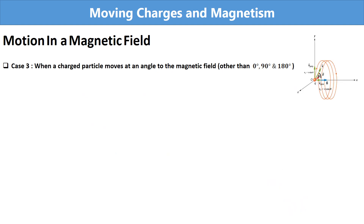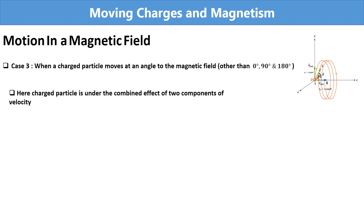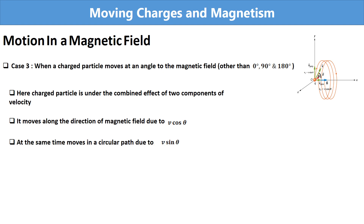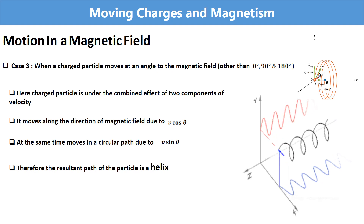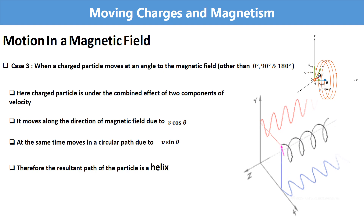When a charged particle moves at an angle to the magnetic field, it is under the combined effect of two components of velocity. It moves along the direction of the magnetic field due to vcosθ, and at the same time it moves in a circular path due to vsinθ. Therefore, the resultant path of the particle is a helix, as shown in the figure.